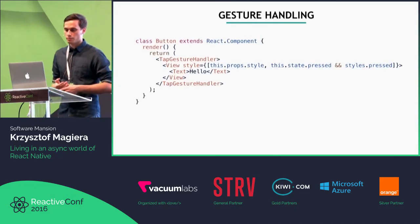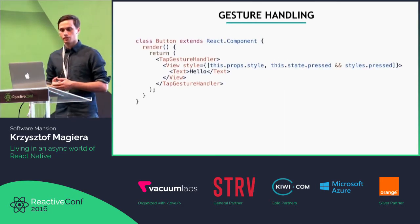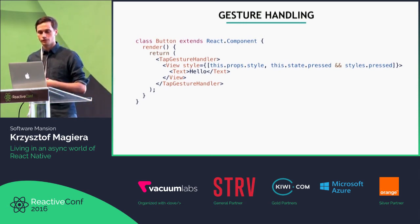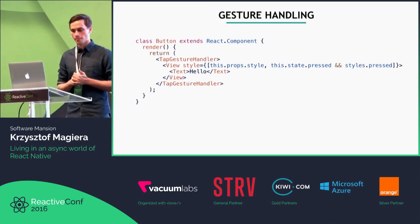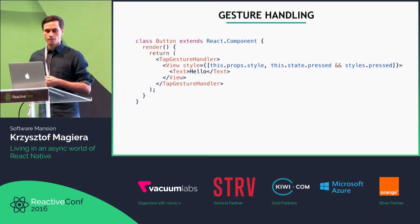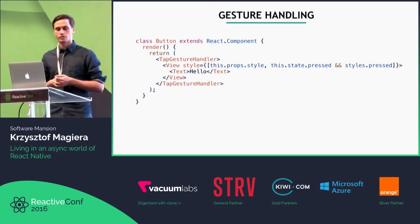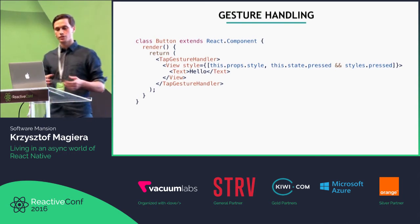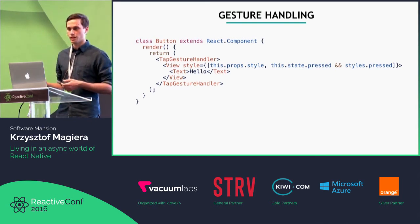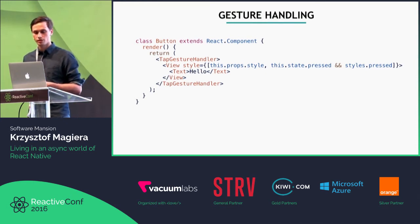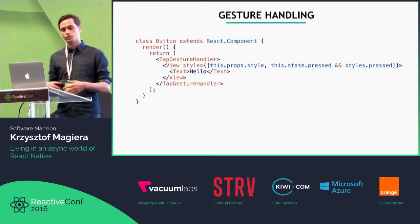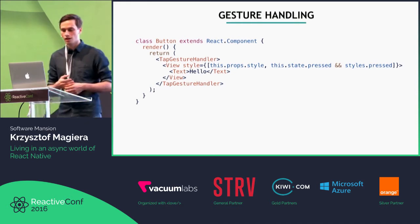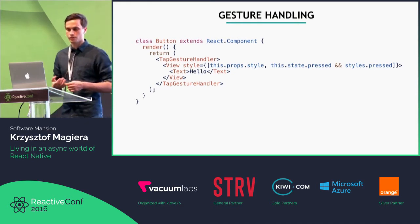I've been prototyping a solution inspired by Andy Matuszczyk from the ReactJS conference in January this year. The solution is to do the same as we did with Animated — move the logic about who is responsible for recognizing the gesture to the UI thread, so it can execute without communicating with JavaScript very much. The library is called GestureHandler.